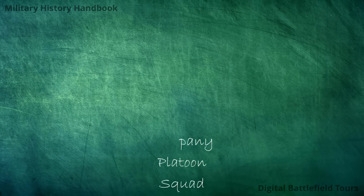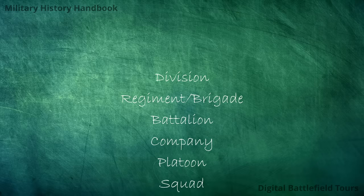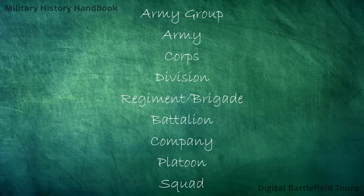Moving on to the units themselves, here is the entire list from smallest to largest: squad, platoon, company, battalion, regiment and brigade, division, corps, army, and army group. We can already draw a dividing line between division and corps, separating the tactical units — division and below — from the larger operational formations: corps, army, and army group.